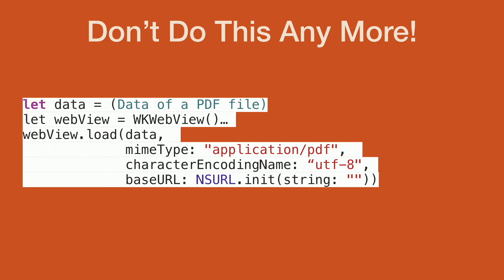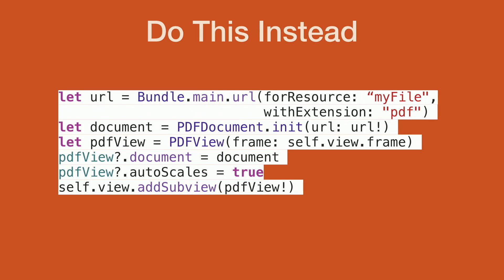If there's one thing I'd love everyone to leave here never doing again, it's instantiating a WebView to display a PDF. It's easy and it was the way to do it for a long time, but you're basically spinning up Safari inside your app just to display a PDF. Don't do this anymore, because you've got PDFKit. This is how to do the same thing with much less memory footprint. You just grab the URL of the file, throw it into a PDFDocument, throw the PDFDocument into a PDFView, set autoScales, throw it on the screen, and you're done.